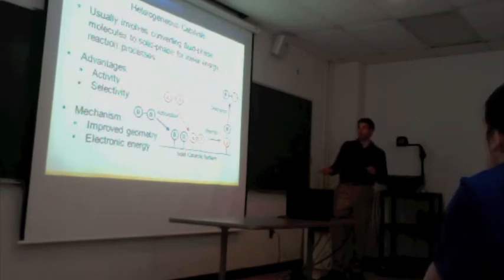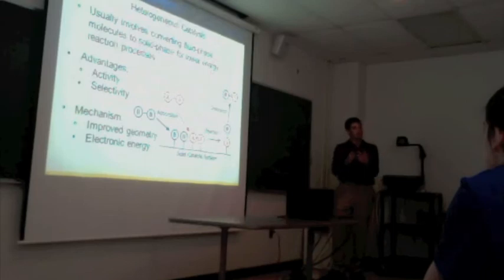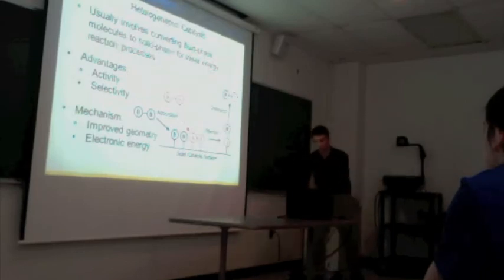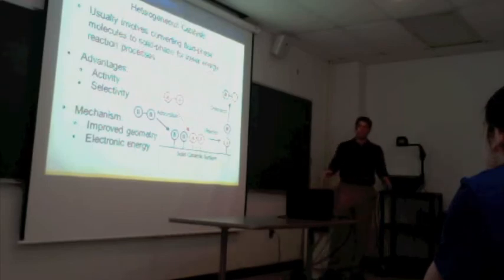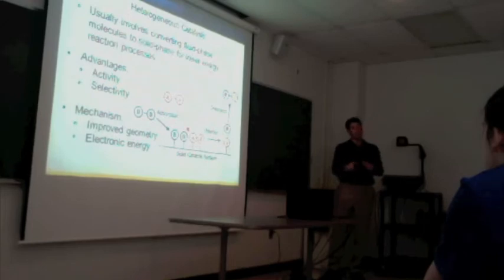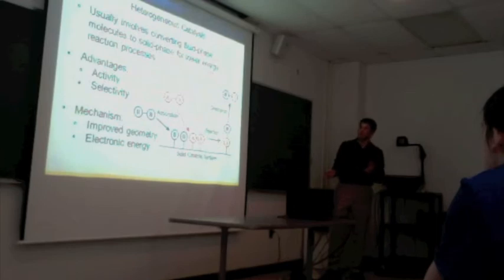The reason that the energetics are different on the surface and we can improve these two things are the geometries improve. If the molecules are just flying around in the gas phase, the chances of them hitting each other are smaller compared if they're on this table moving around. You basically lose a third dimension there. So you're in two dimensions, moving on a plane, and it's much more likely they'll hit each other. And then there's also electronic energy. This solid surface is more or less an infinite sea of electrons that can facilitate these reactions.